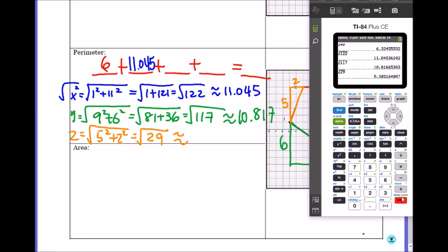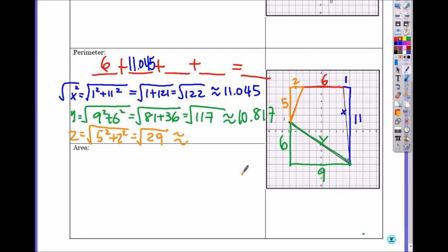So, five point three eight five, so you add them all. Perimeter is the length around the polygon, right? So when you add them all, what do you get?